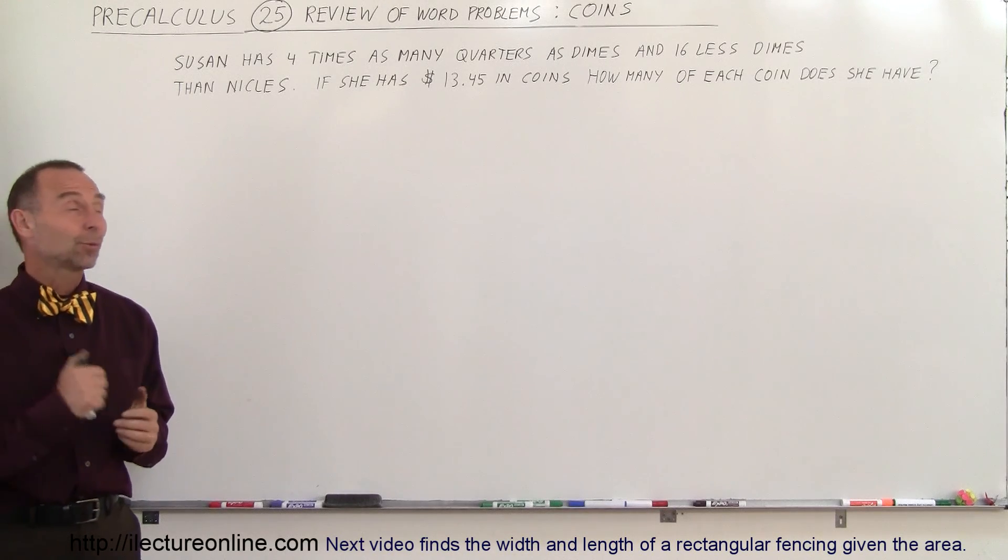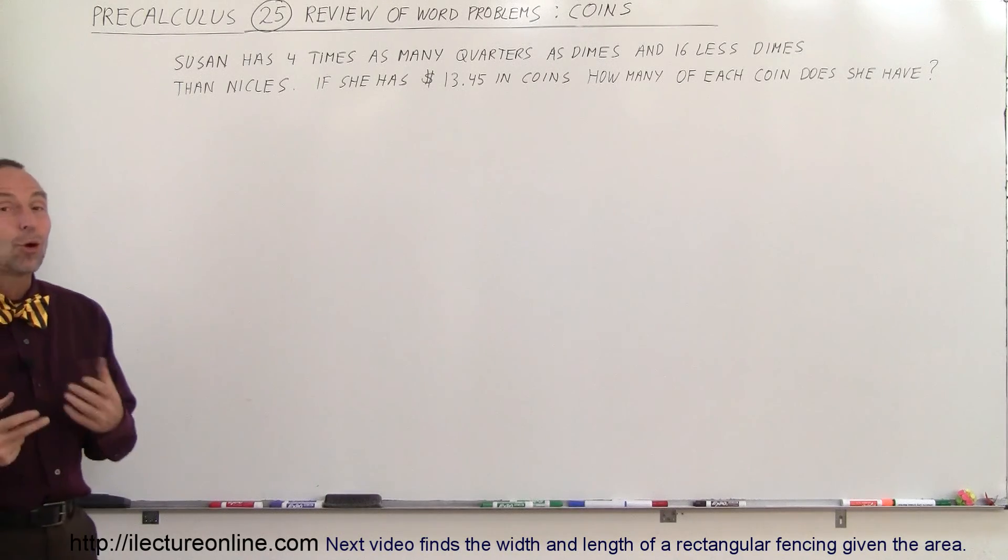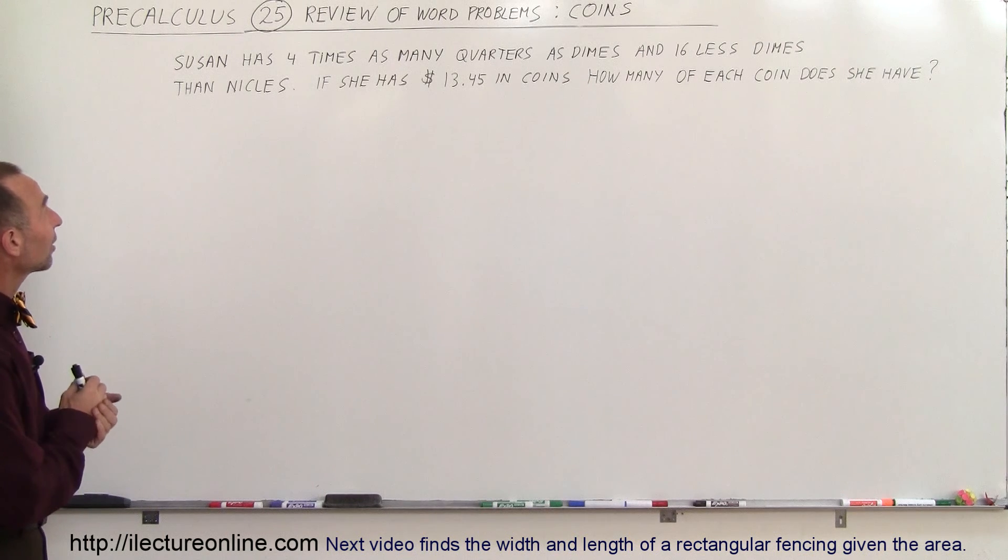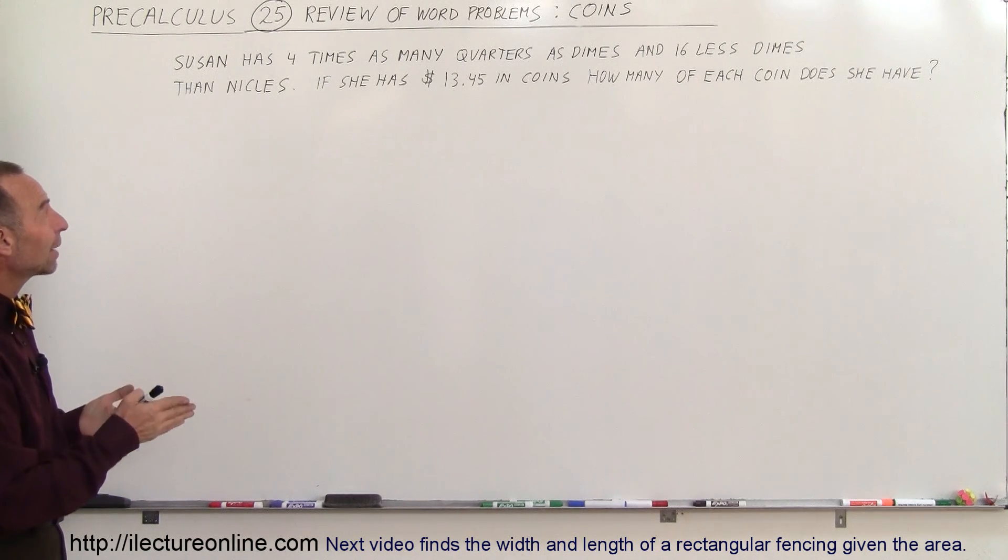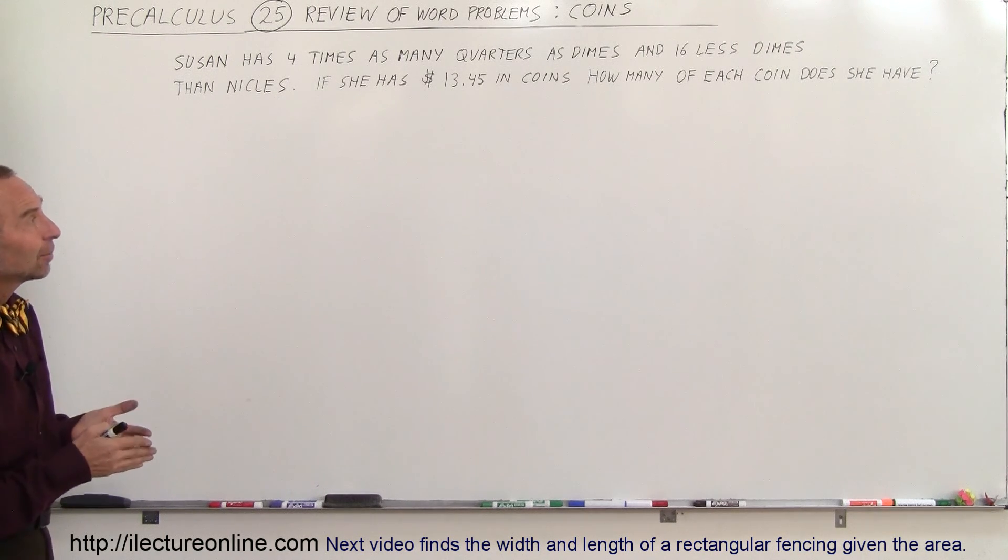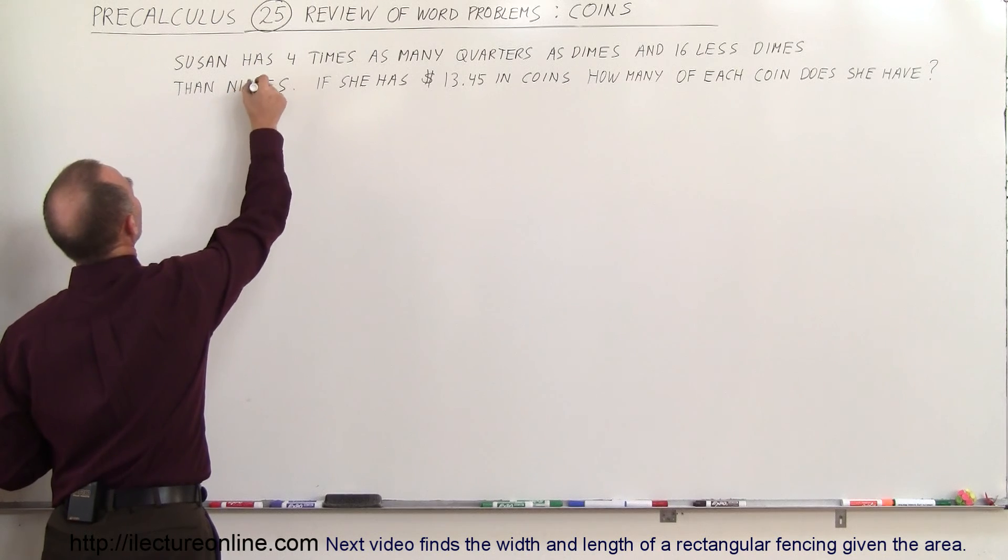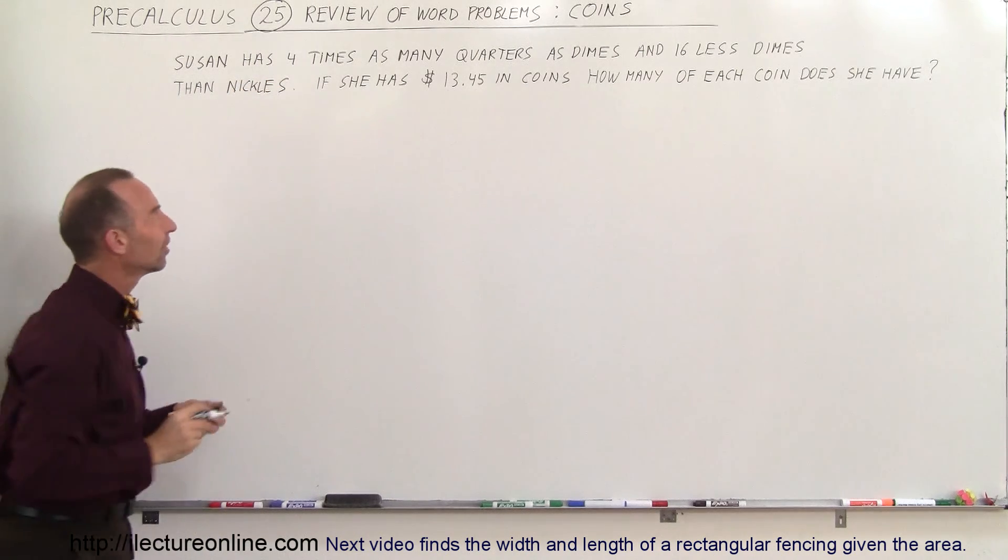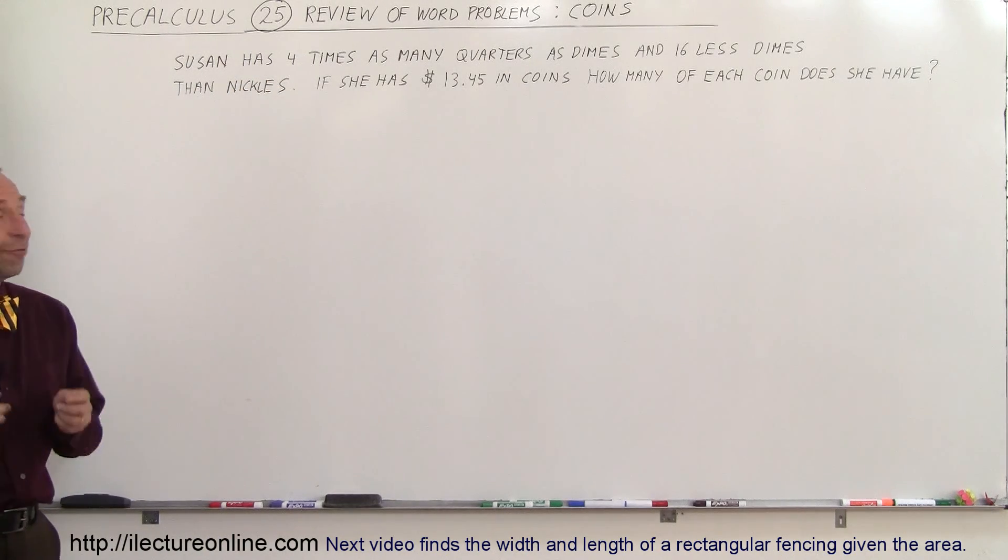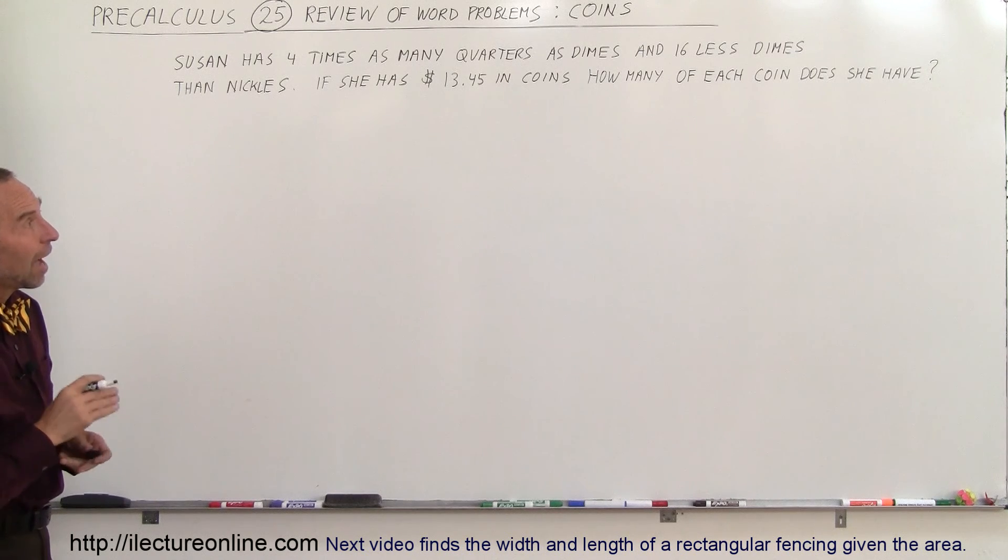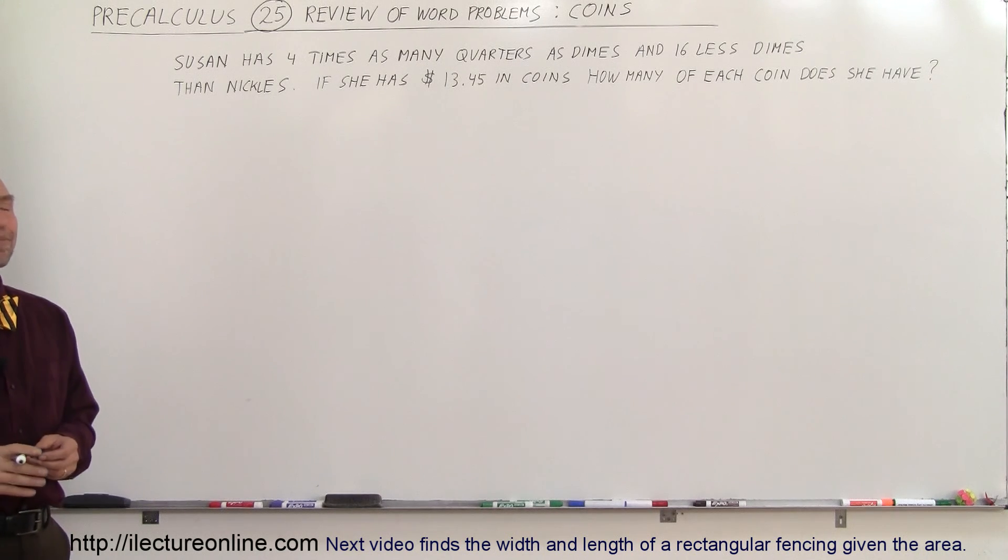Welcome to our lecture online. Our next word problem is one dealing with coins. So here we have a problem that says that Susan has four times as many quarters as dimes and 16 less dimes than nickels. If she has $13.45 in coins, how many of each coin does she have?